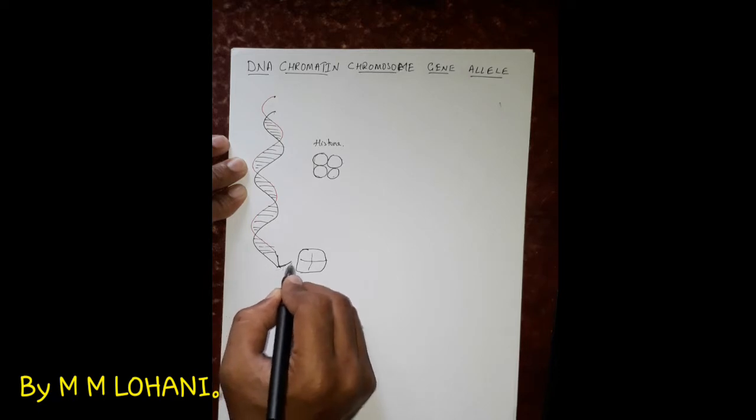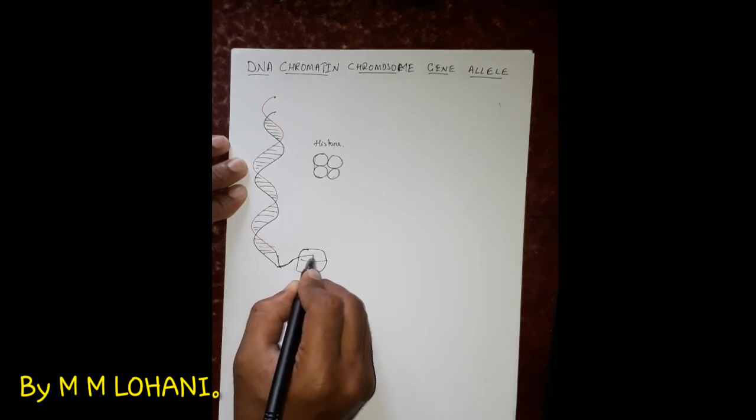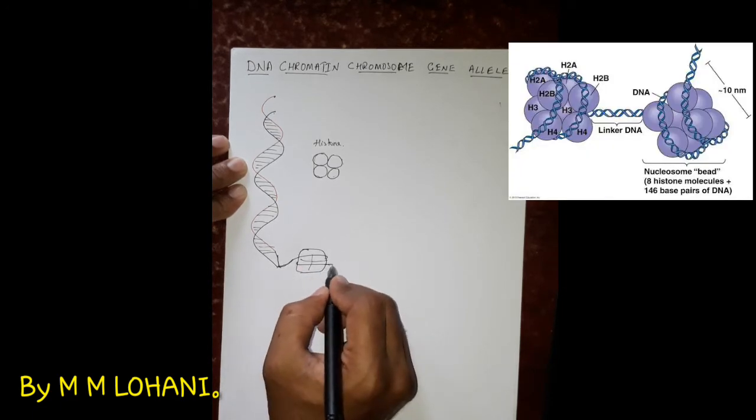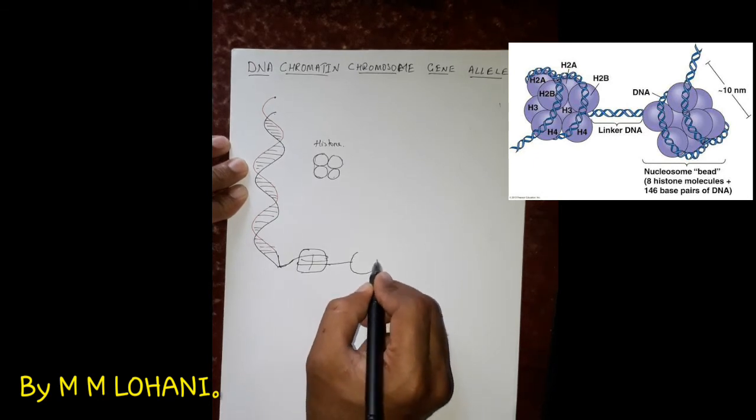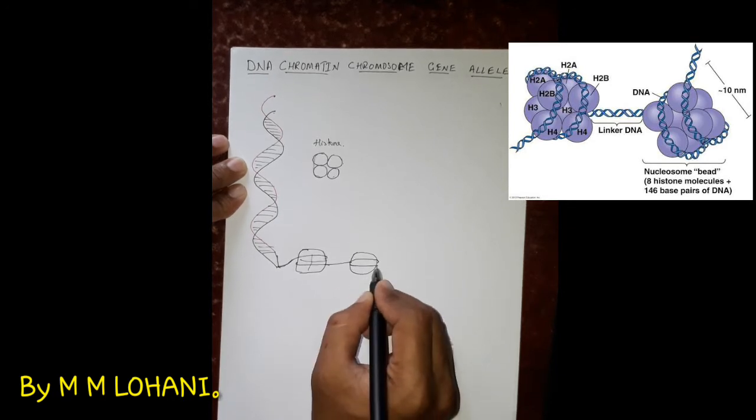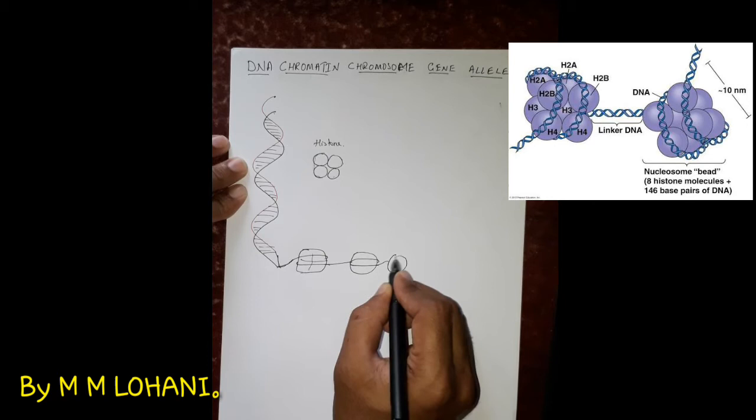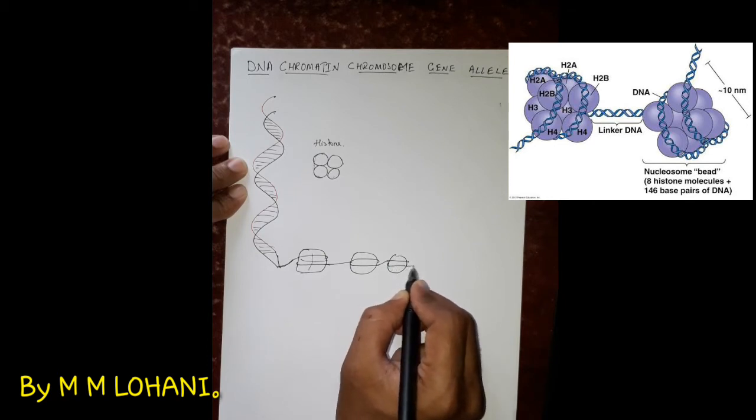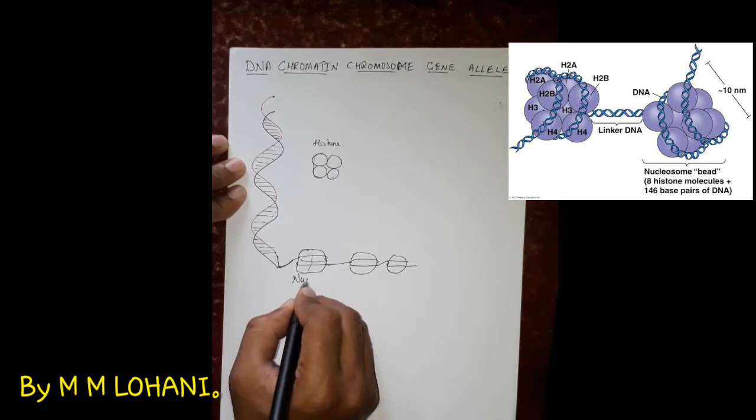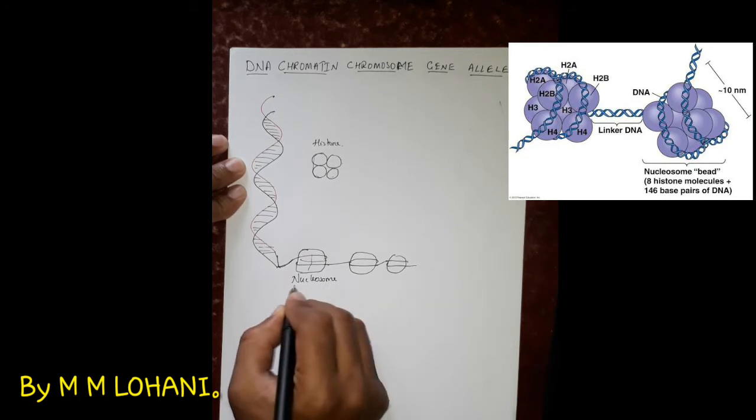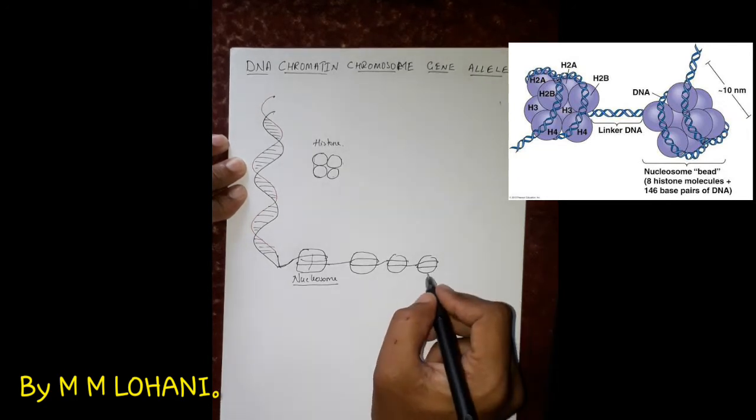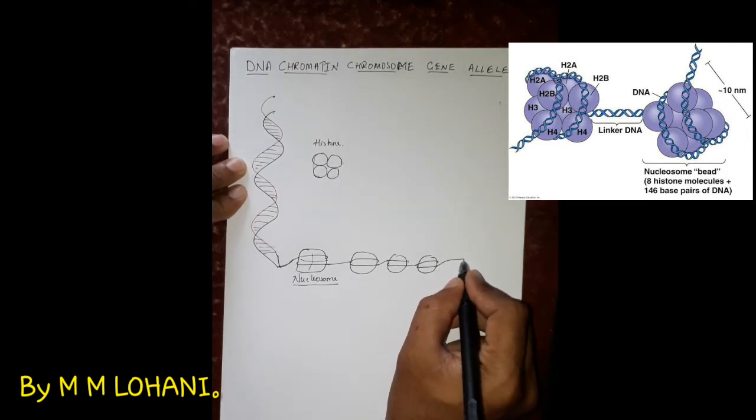So here what will happen - the DNA, now I will draw only a single strand of DNA. So the DNA winds two times around this histone proteins and again it will go to bind to another histone protein. So like this there are so many histone proteins which bind with one another. So this association of DNA with the histone protein is referred as nucleosome.